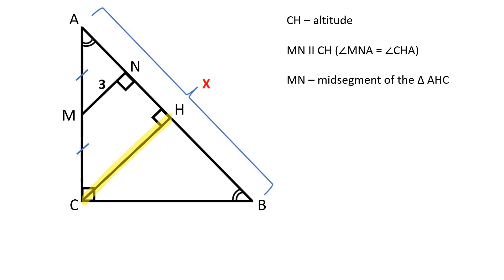We can use the triangle mid-segment theorem to solve for CH. CH equals 2 times MN, which is 6.